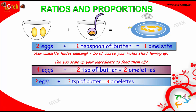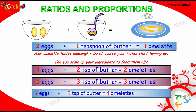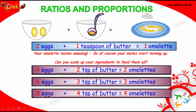I need to prepare 3 omelettes. 1 omelette needs 1 teaspoon and 2 eggs. If I want 3, multiply by 3: 1 into 3 and 2 into 3 — that's 6 eggs and 3 teaspoons of butter. For 4 omelettes: 4 teaspoons and 2 into 4, that's 8 eggs. So 8 eggs plus 4 teaspoons of butter gives 4 omelettes.